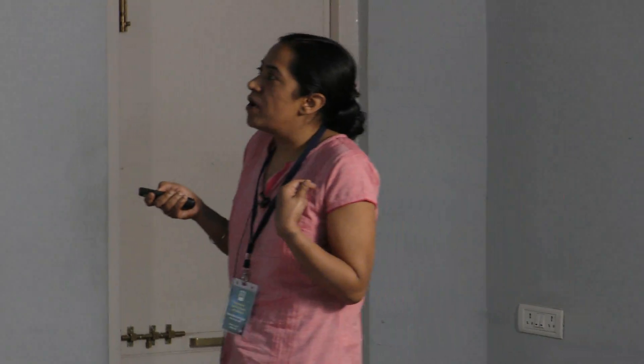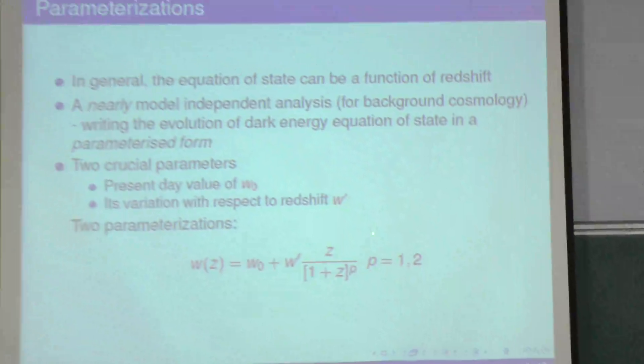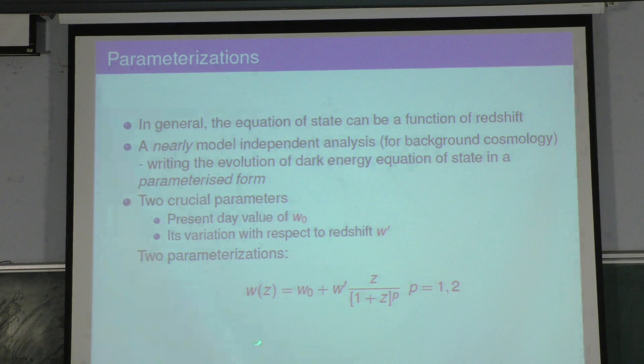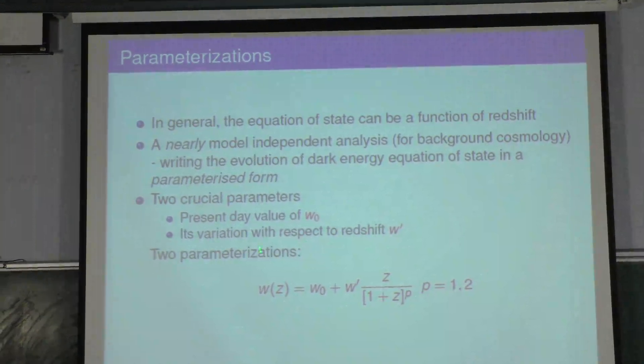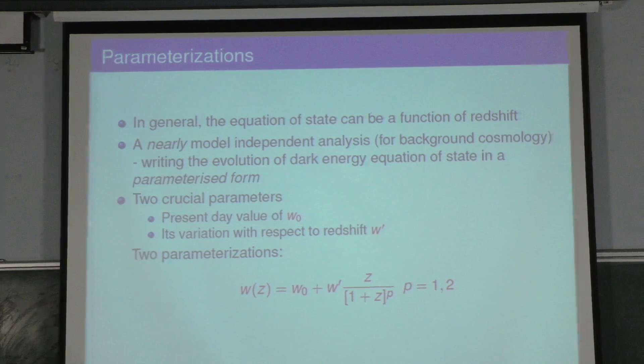Observations are not sensitive enough to go beyond any number of parameters. So two parameters are enough for any function you want to assume for the dark energy equation of state parameter. That's the empirical result.